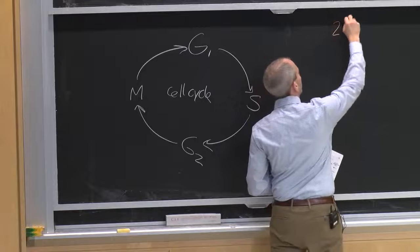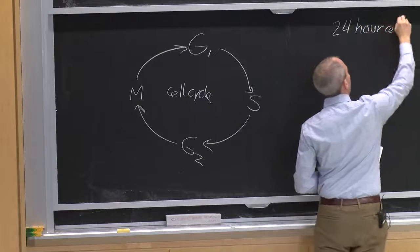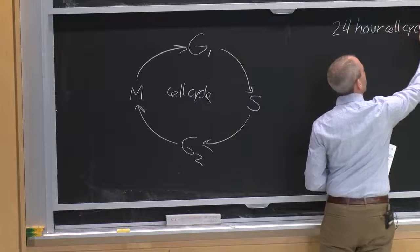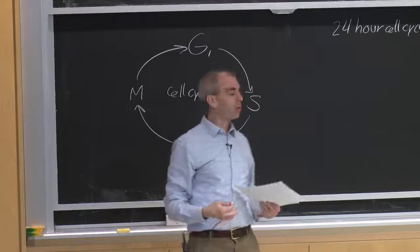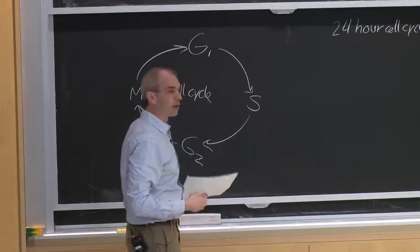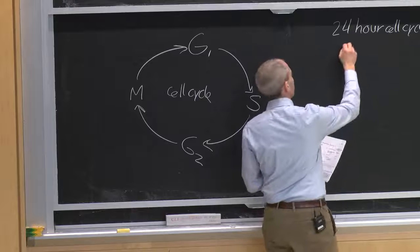But let's actually think a little bit about the timing. So if we consider a 24-hour cell cycle, and this is what we would see for many of the human cells that are growing in culture, one of these cells is going to divide on average about every 24 hours.